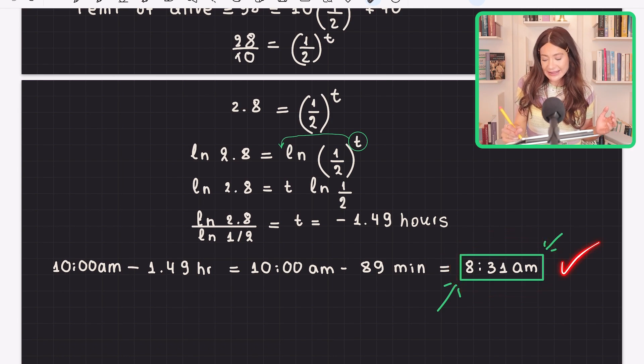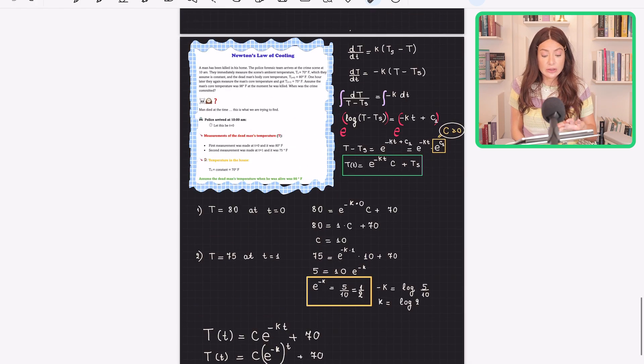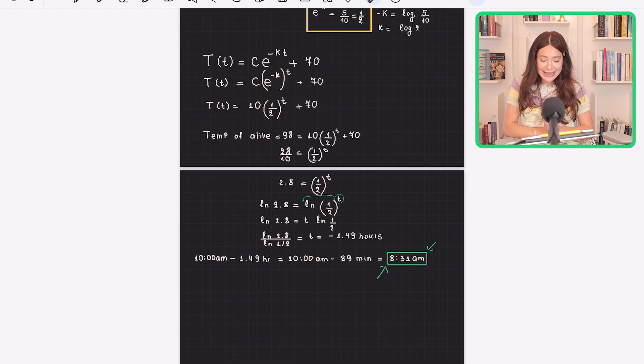That is a solved problem. This is how you determine time of death using Newton's law of cooling. Thank you so much for watching. See you in the next video. Bye.